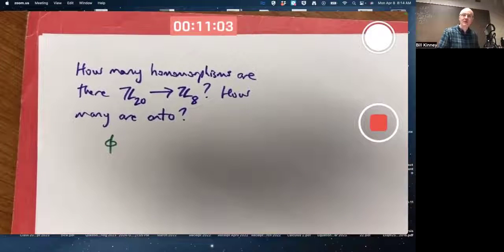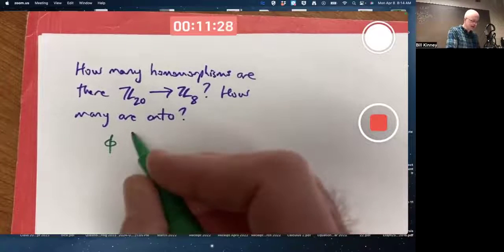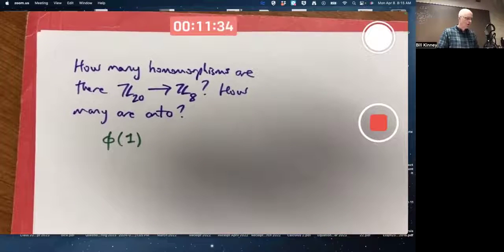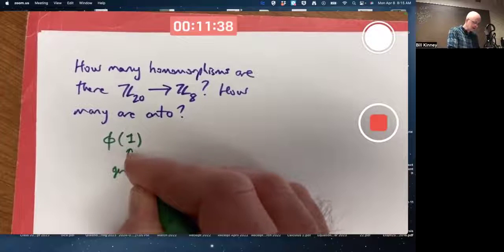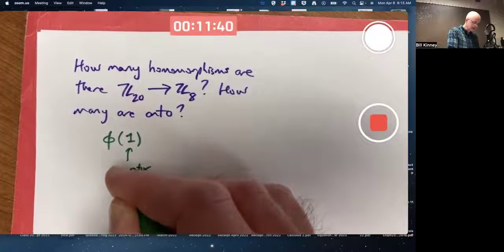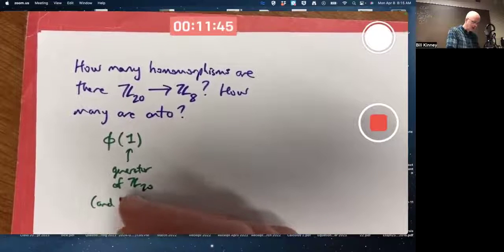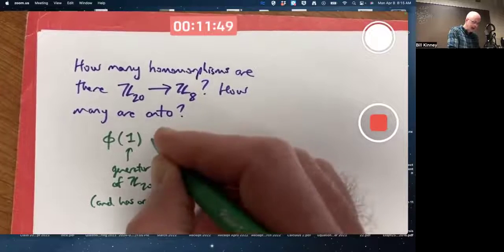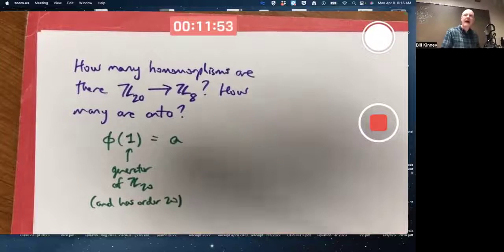It's also helpful to look at another example. The other example I suggested was example 11. The key idea there in example 11 is to think about what one gets mapped to. One is a generator of Z20, the simplest generator of Z20, and has order 20. What does it get mapped to? It gets mapped to some element of Z8. We don't know what element. Call it A.